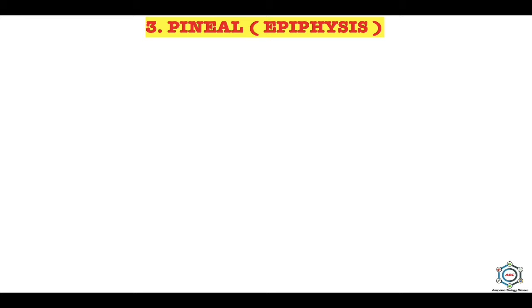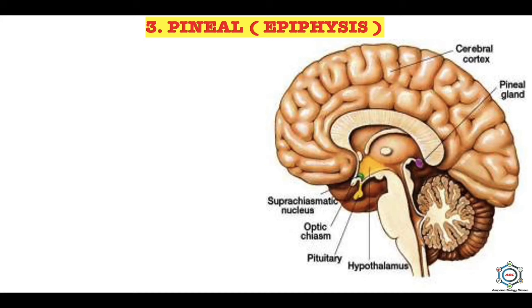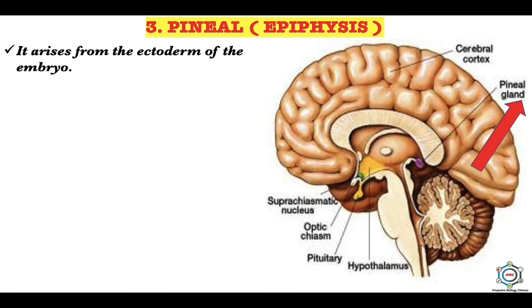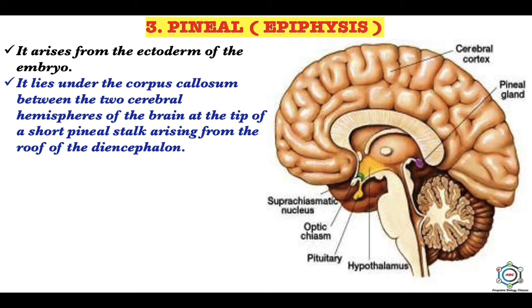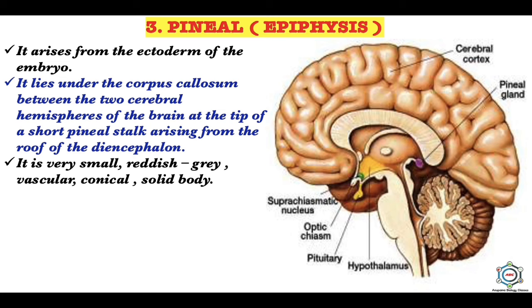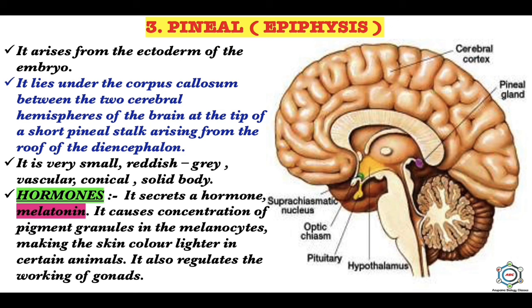The third gland is the pineal gland or epiphysis. It arises from the ectoderm of the embryo and lies under the corpus callosum between the two cerebral hemispheres of the brain, at the tip of a short pineal stalk arising from the roof of the diencephalon. It is a very small, reddish-gray, vascular, conical solid body. Its hormone is melatonin, which causes concentration of pigment granules in melanocytes, making the skin color lighter in certain animals, and also regulates the working of the gonads.